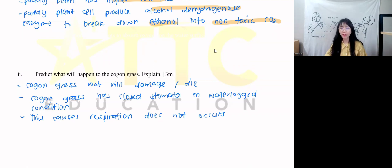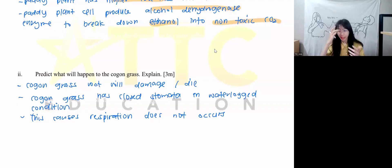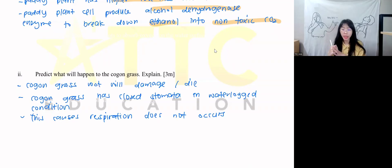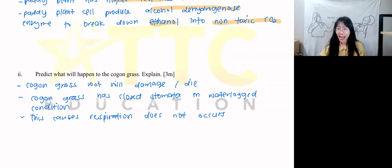For chapter 7, you need to know about lactic acid fermentation, alcohol fermentation, and aerobic respiration. There are also questions related to how to produce yogurt — refer to your notes for those.